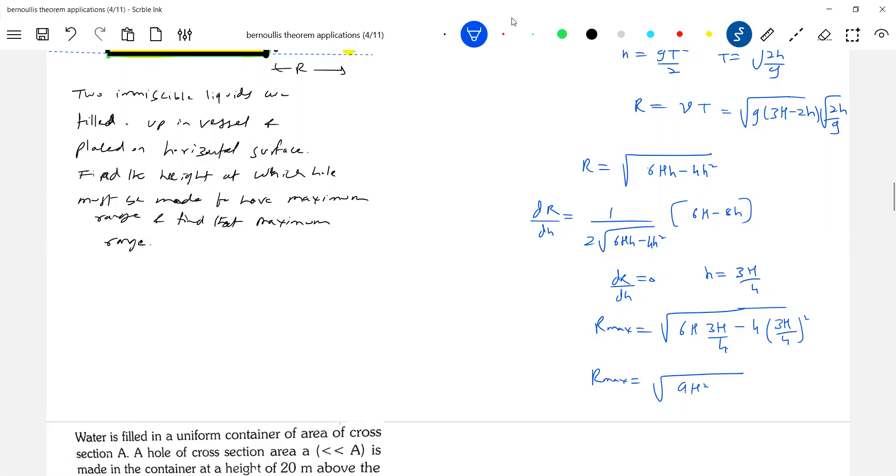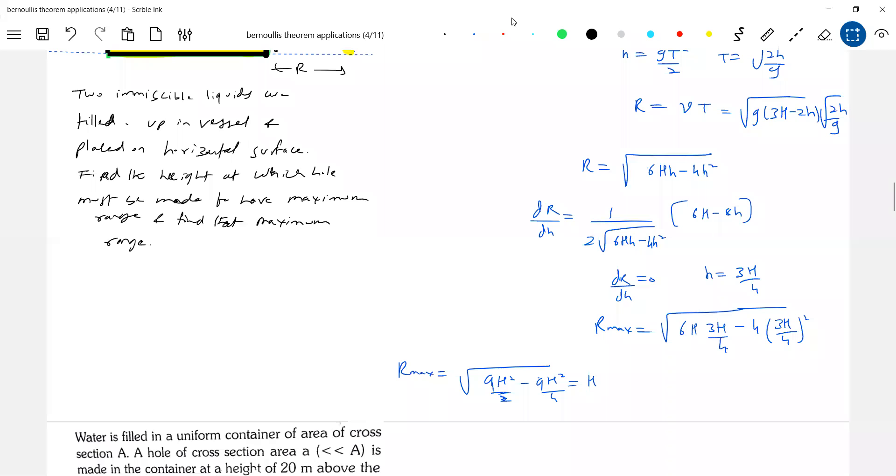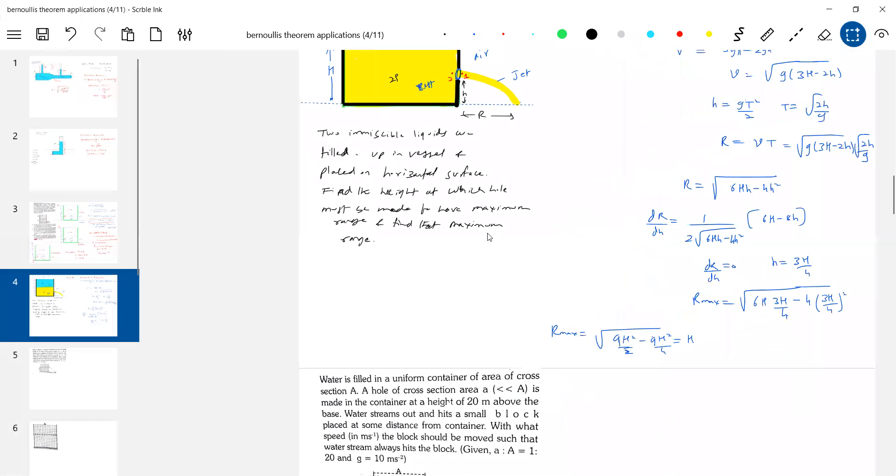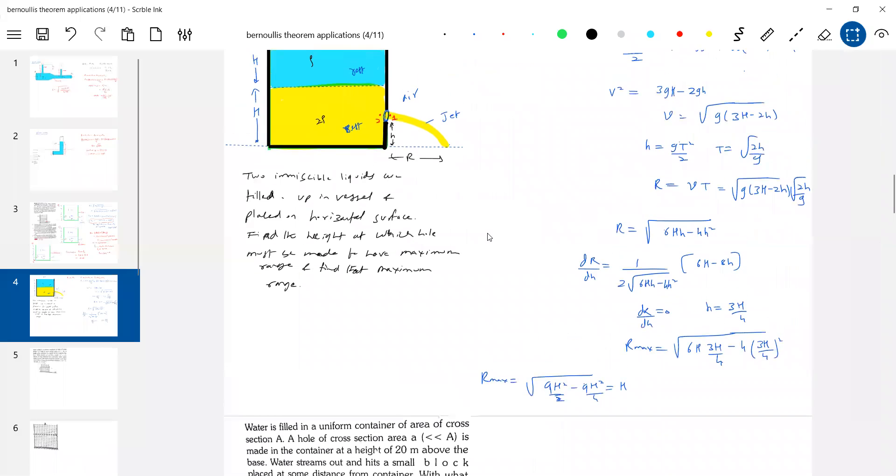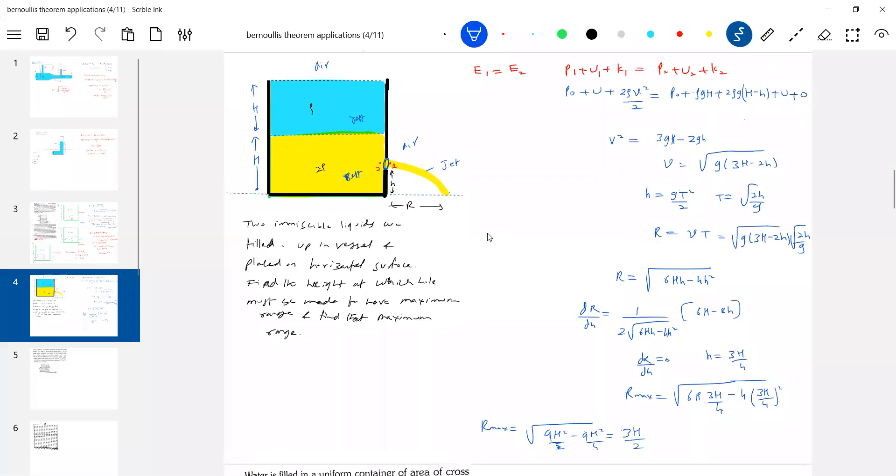9H square by 2, times 1/4 gives 3H square by 4. So 9H square by 4. H will come outside... 3H square by 4, which gives 3H by 2. The complete problem is visible, so this will be your answer.